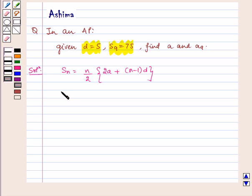so it can be written as 75 is equal to N is equal to 9, 9 by 2 multiplied by 2A plus 9 minus 1D is given as 5, so multiplied by 5.